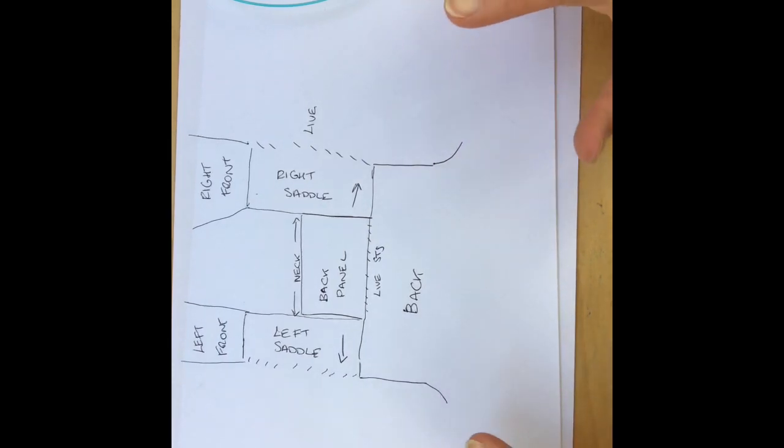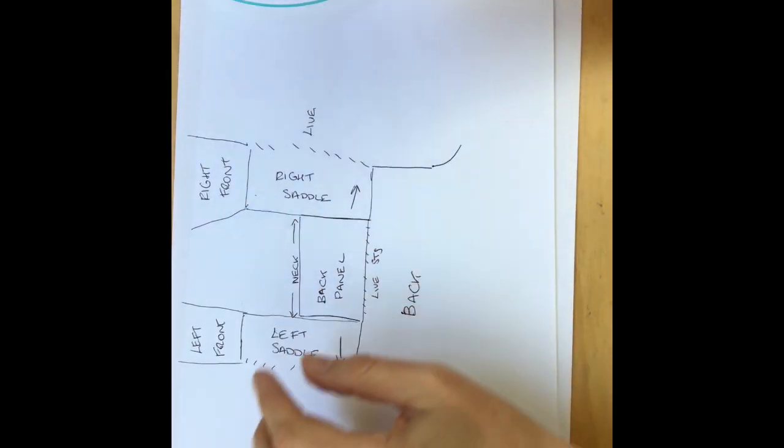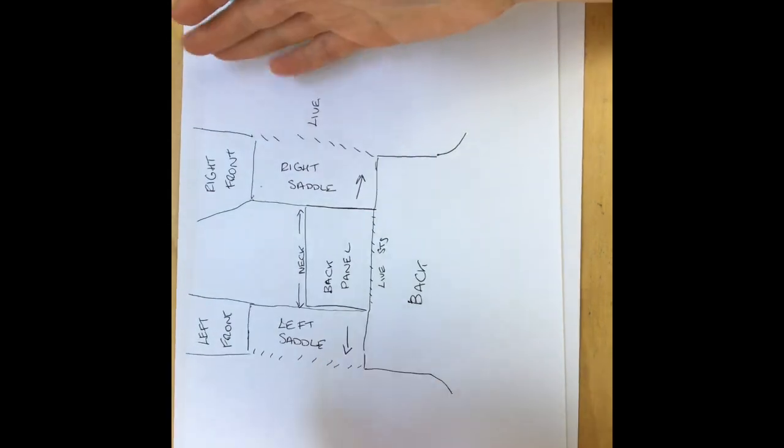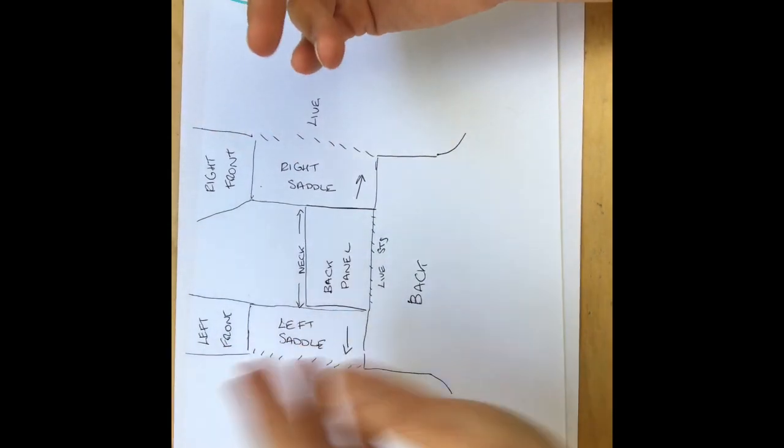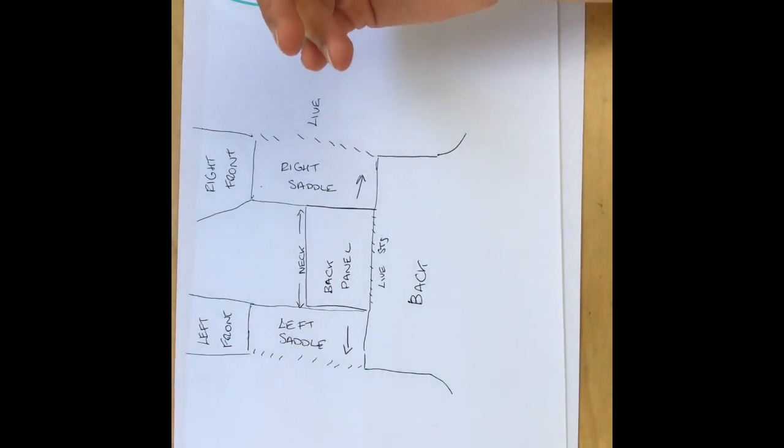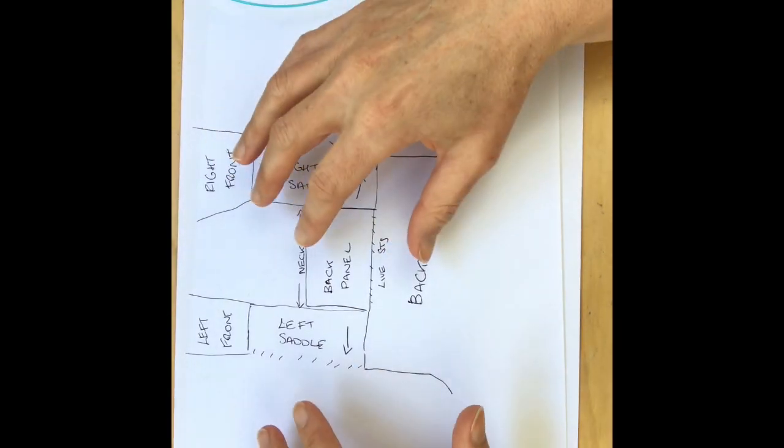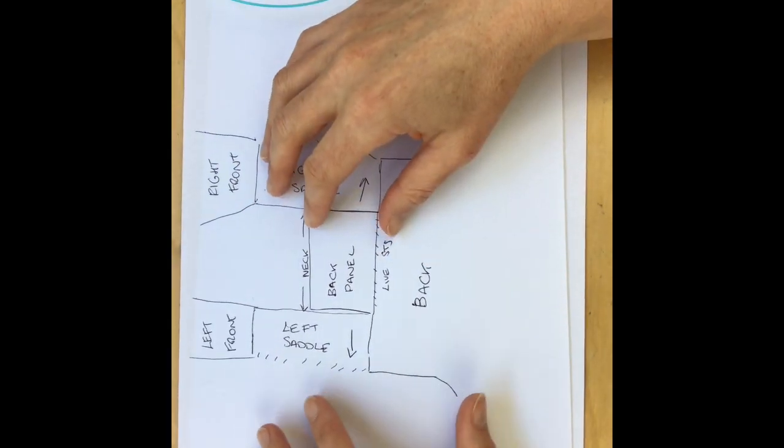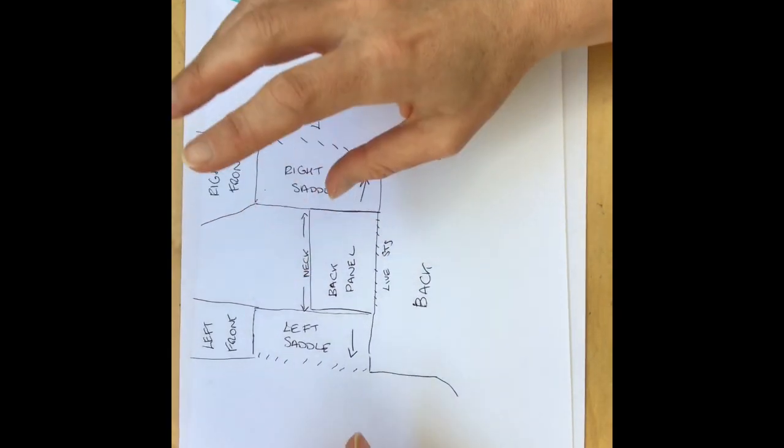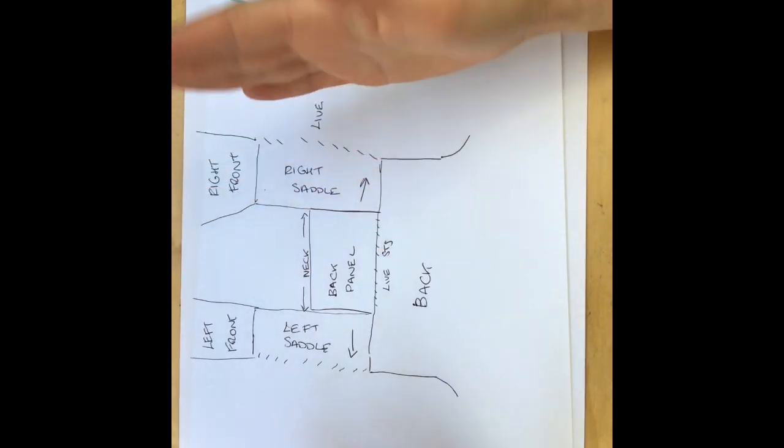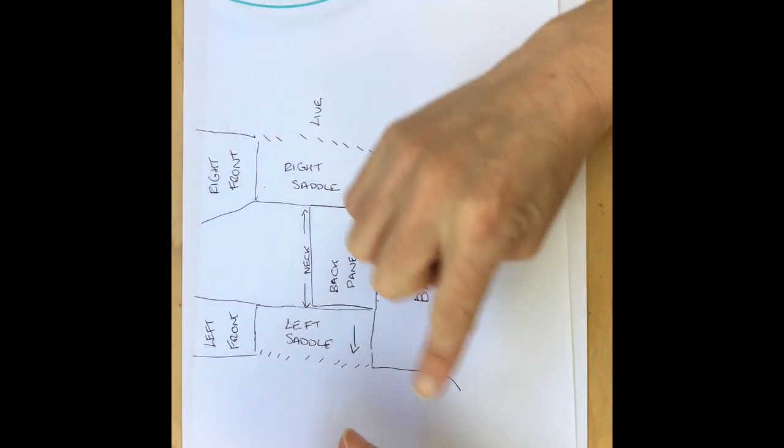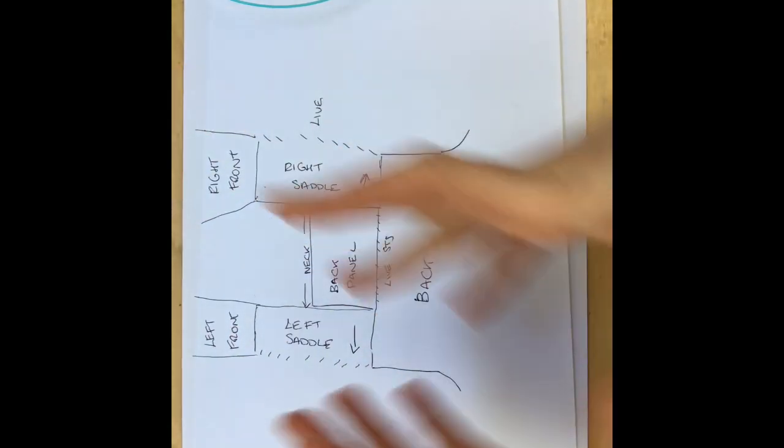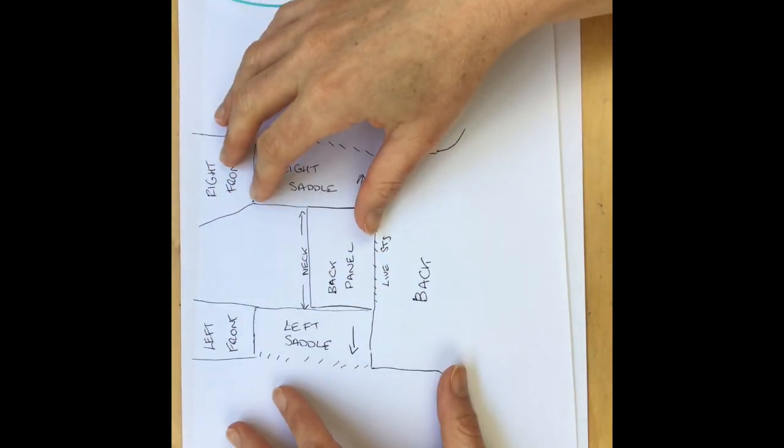Today I want to show you how the saddle shoulder of the Transom cardigan fits together. If you haven't done a saddle shoulder before, and particularly if you haven't done a seamless one, it might be quite confusing how all the parts fit together. So I thought I would run through a quick diagram and show you how it all fits together so you have an overview before you get started.